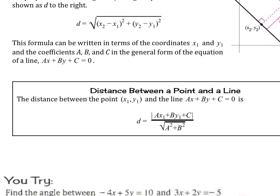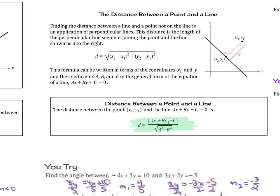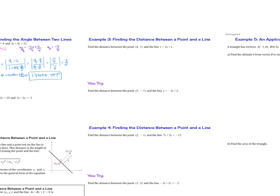The formula can be written in terms of coordinates x1, y1 and the coefficients a, b, and c in the general form ax plus by plus c equals 0. The distance equals the absolute value of (a times x1 plus b times y1 plus c), all over the square root of a squared plus b squared. We'll apply that formula now.